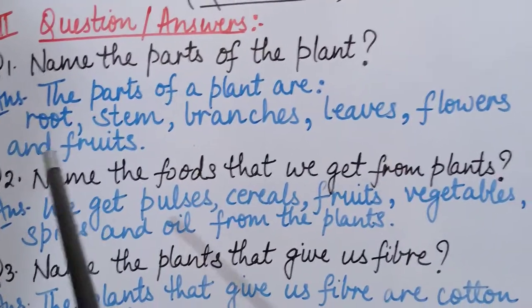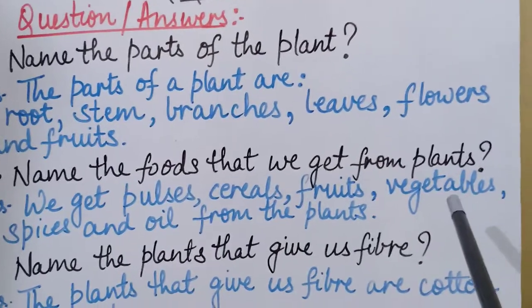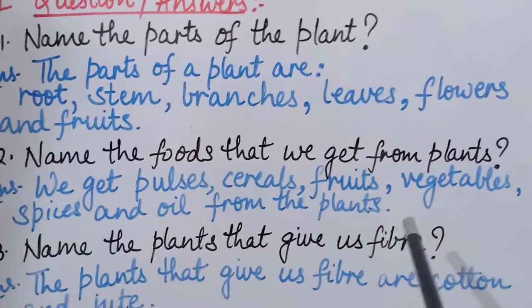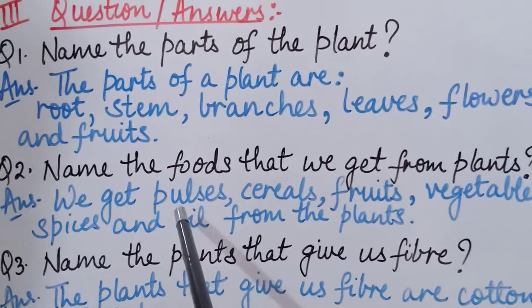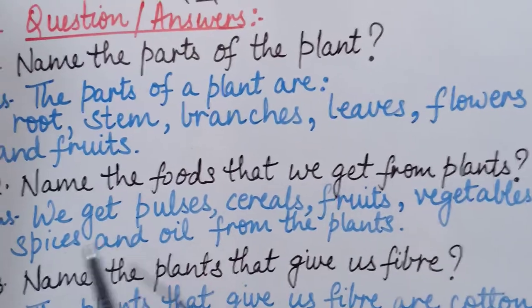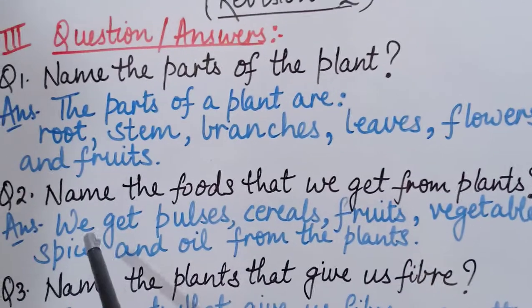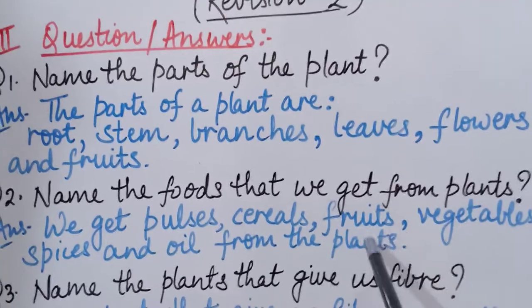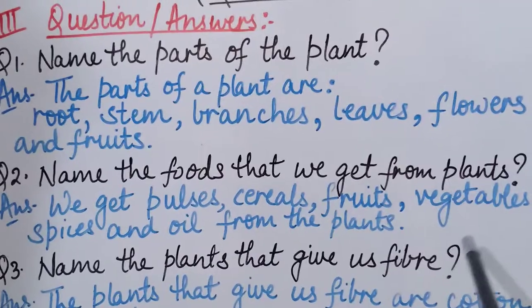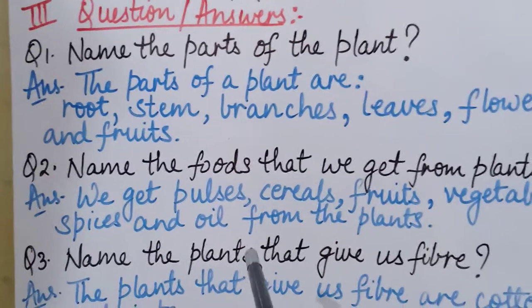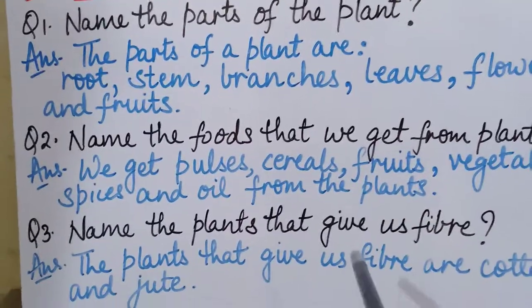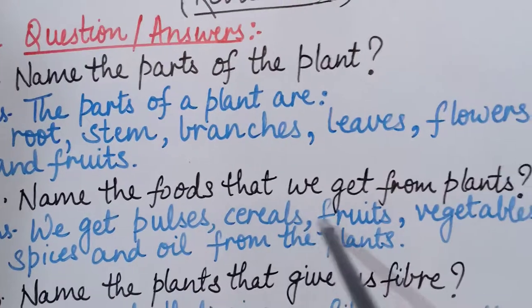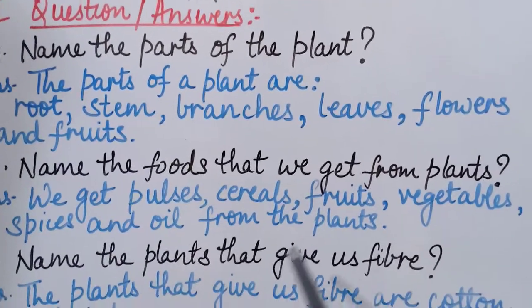The second question is: name the foods that we get from plants. The majority of our food comes from plants. We get pulses, cereals, fruits, vegetables, spices and oil from the plants. Oil is what we use to make vegetables and in food preparation.